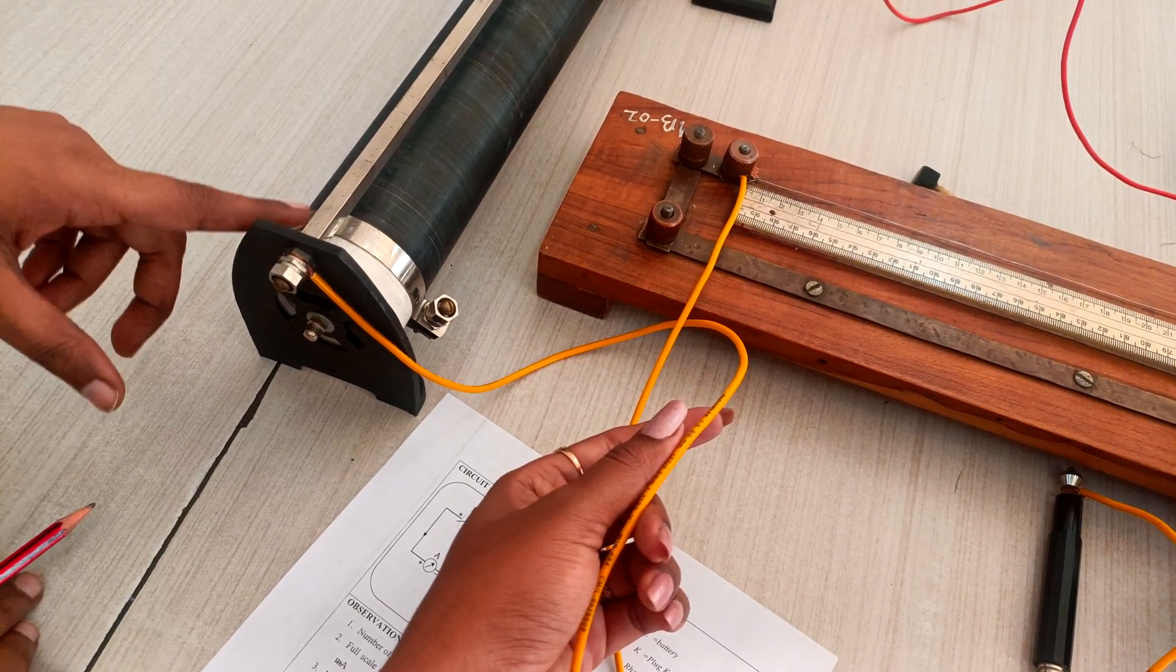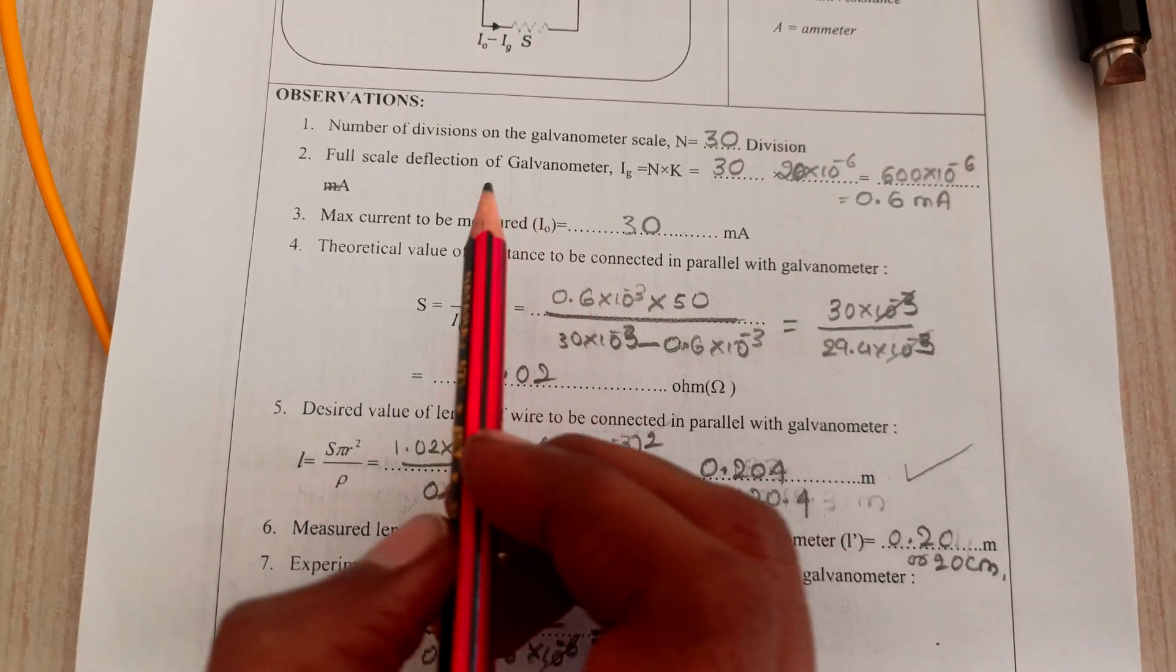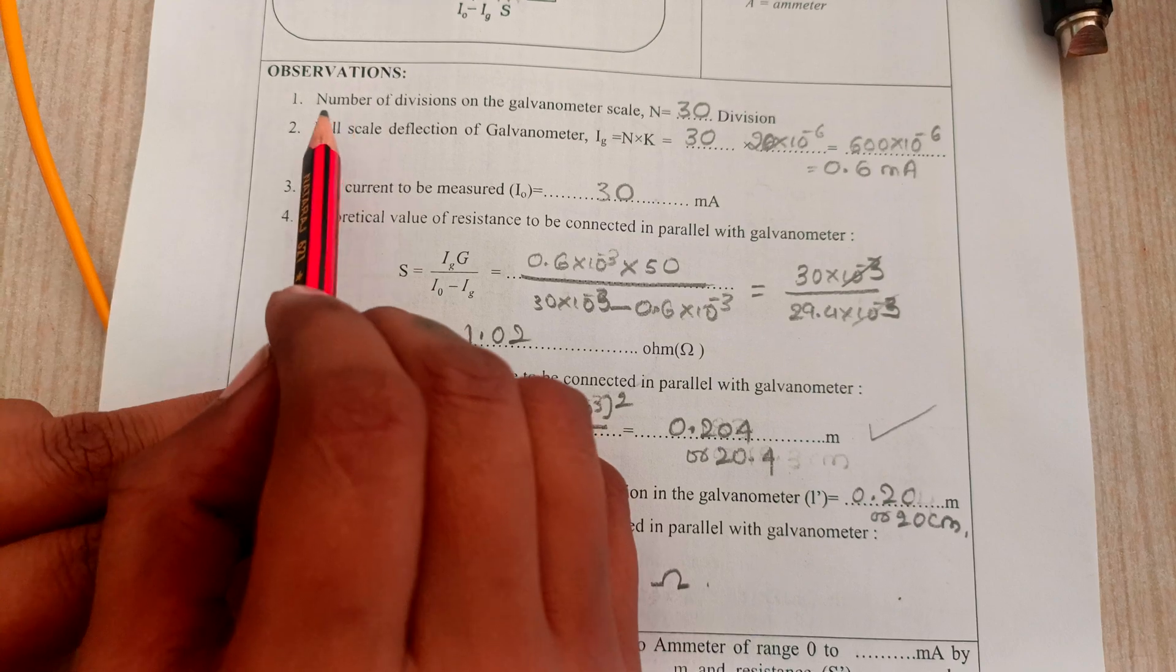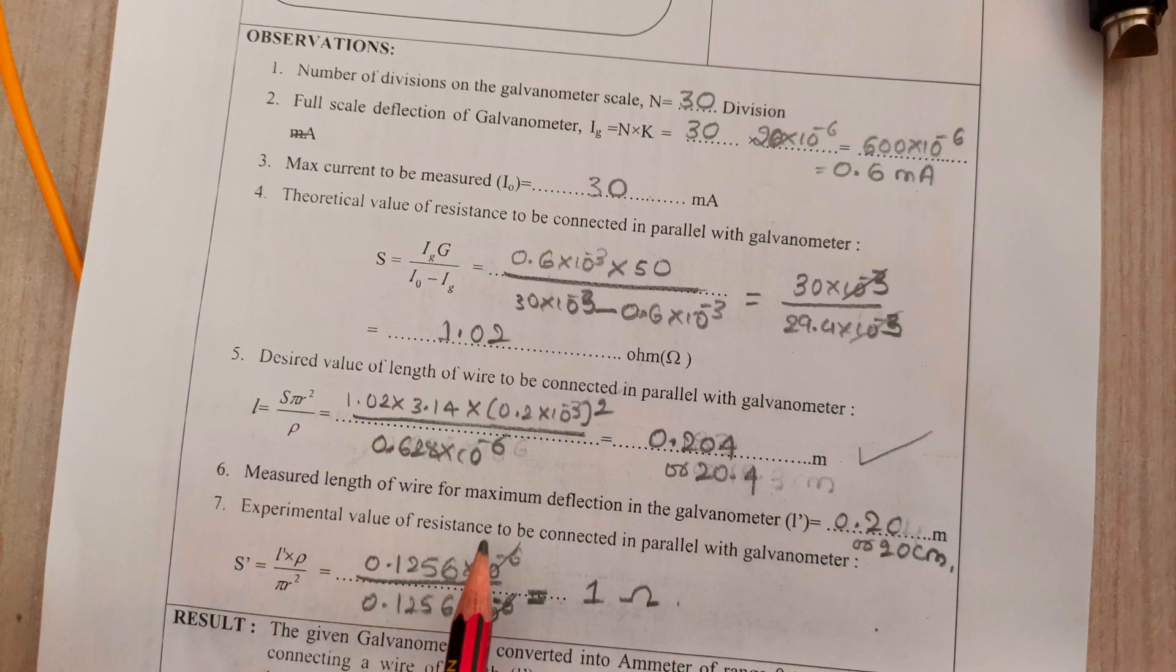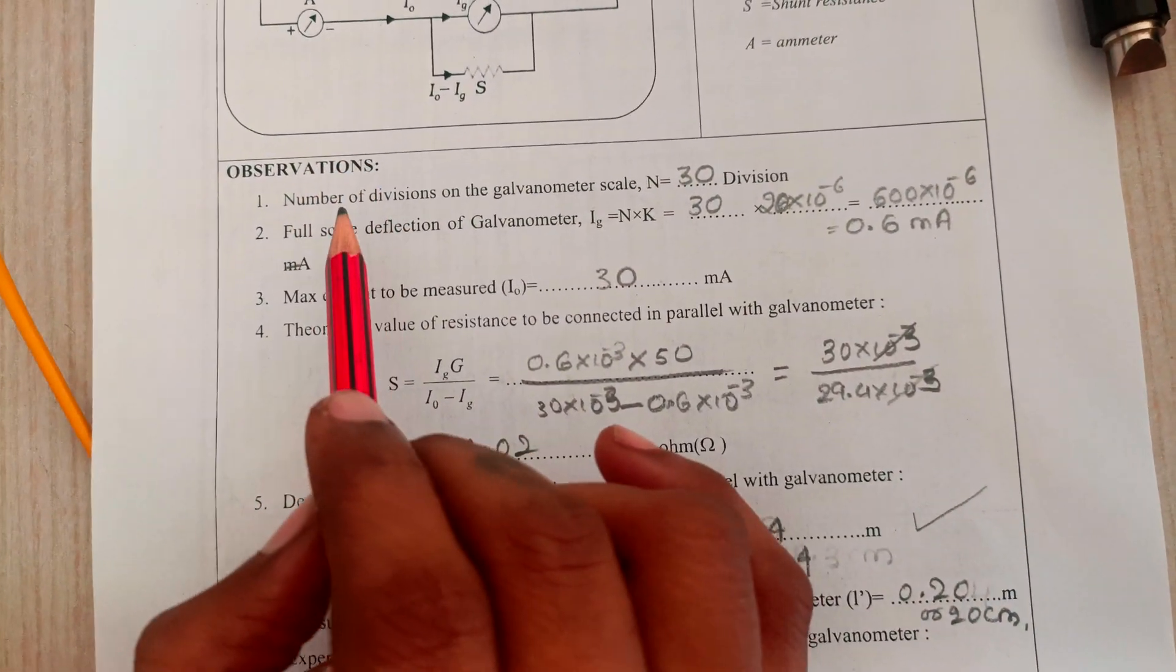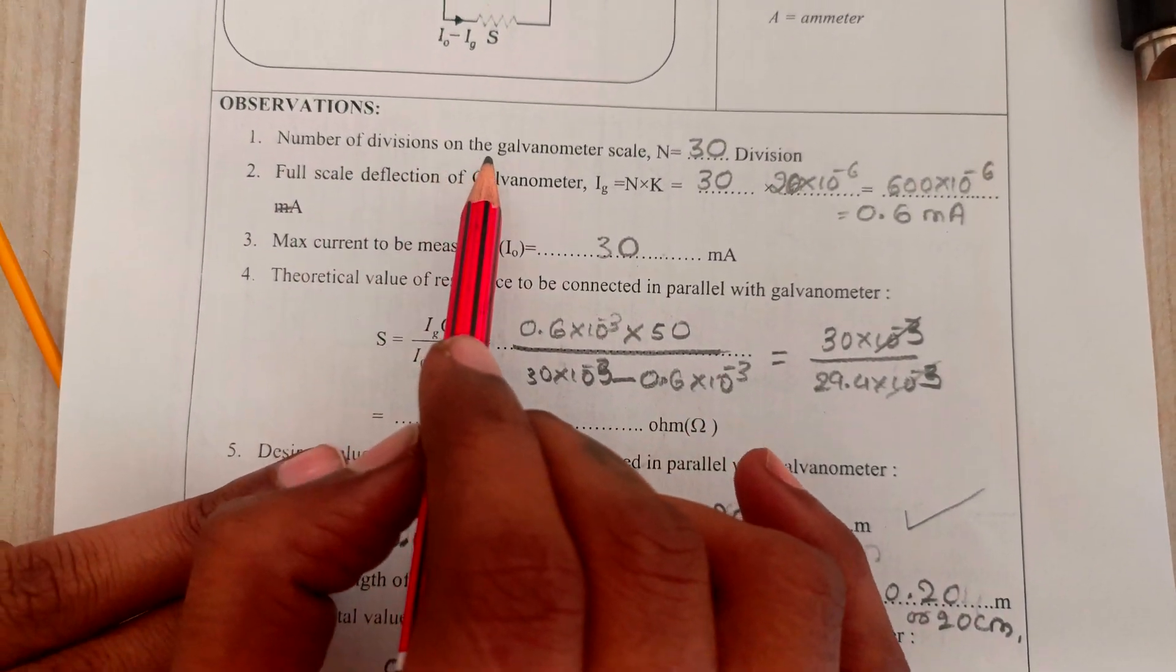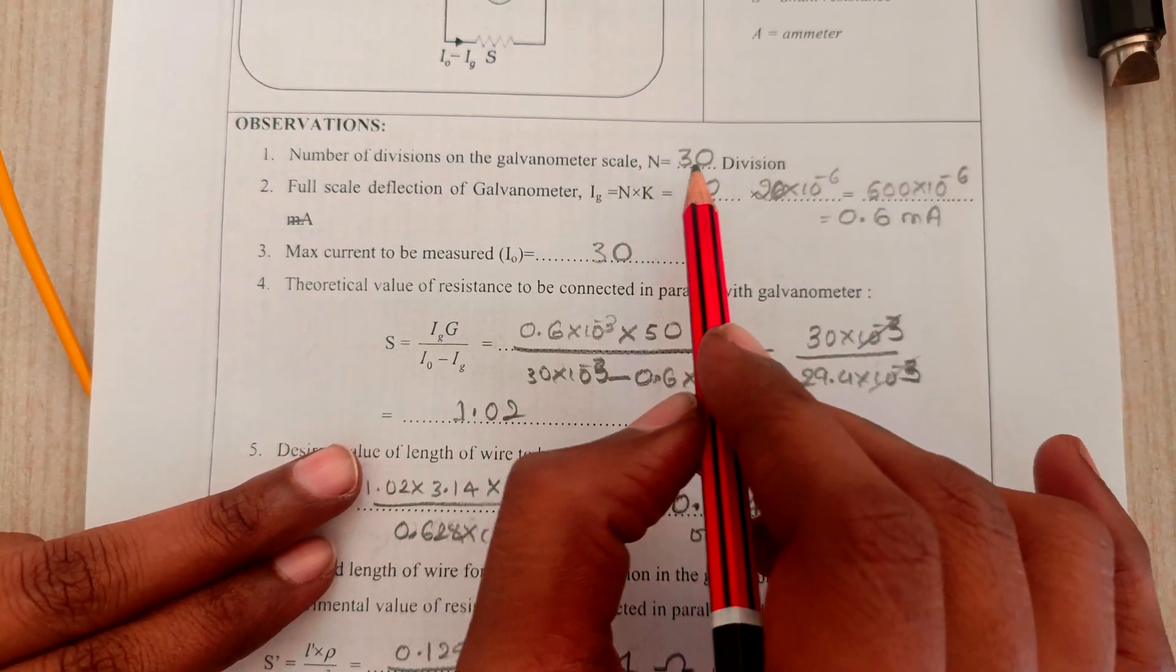To do the experiment we have some observations along with some standard calculations to get the practical values. First observation is the number of divisions on the galvanometer scale, which is 30 divisions.